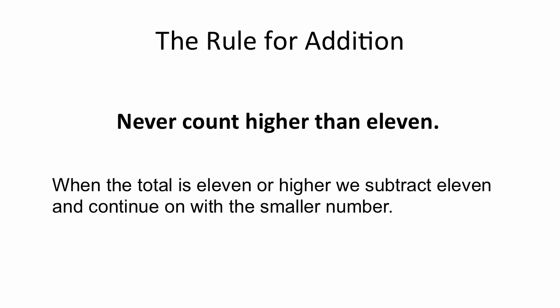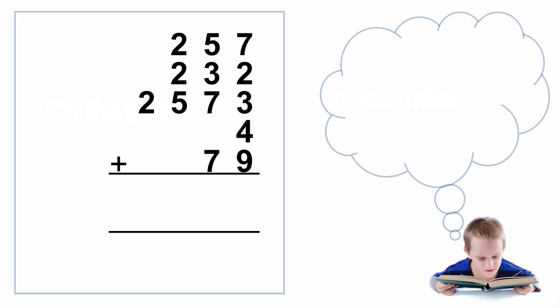The rule for addition in the Trachtenberg system is never count higher than 11. When the total is 11 or higher, we subtract 11 and continue on with the smaller number. Let's have a look at an example.